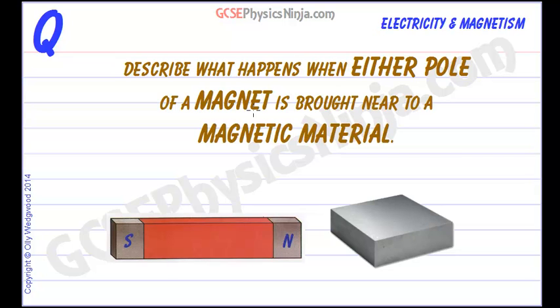Describe what happens when either pole of a magnet is brought near to a magnetic material. So here's a bar magnet. It's a permanent magnet and therefore it has a magnetic field around it. That magnetic field extends from the north pole and travels around north to south.